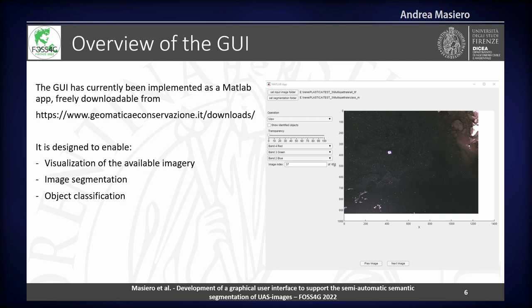In the next slides, we are going to focus on the three kinds of operations that can typically be done by the user. The first operation is related to the visualization of the data. The second one is related to segmentation. And the third case is about object classification. In particular, we are mostly going to focus on the second step — the segmentation step.